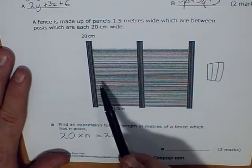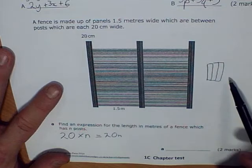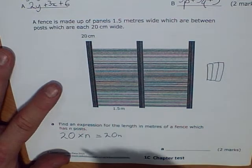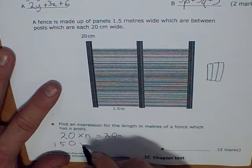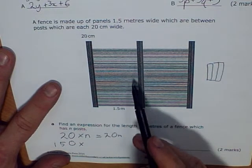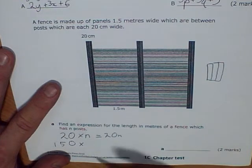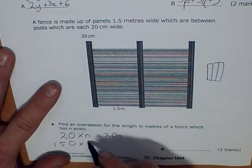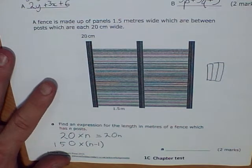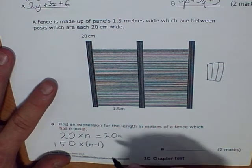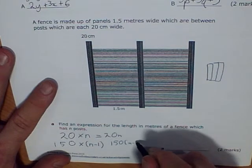One, two posts, one panel. Three posts, two panels. Four posts, three panels. And so on. So what I've got is 150 centimetres multiplied by how many panels in terms of the number of posts. Well, it's one less than my number of posts. So that is n minus 1. 150 times n minus 1, which is also the same as multiplying out the brackets: 150n minus 150.